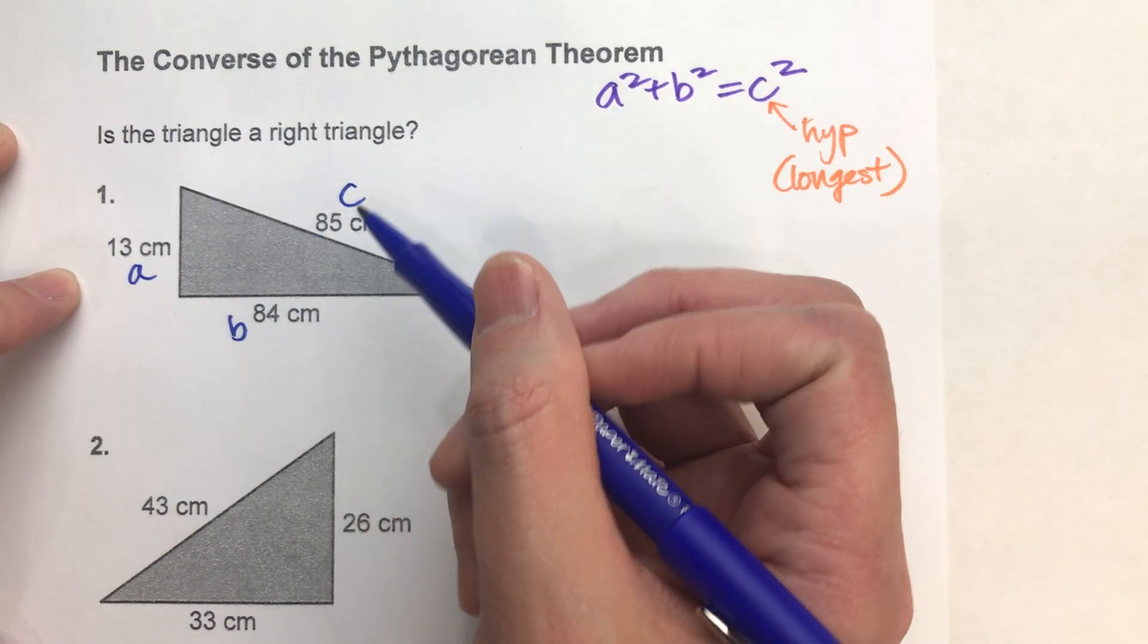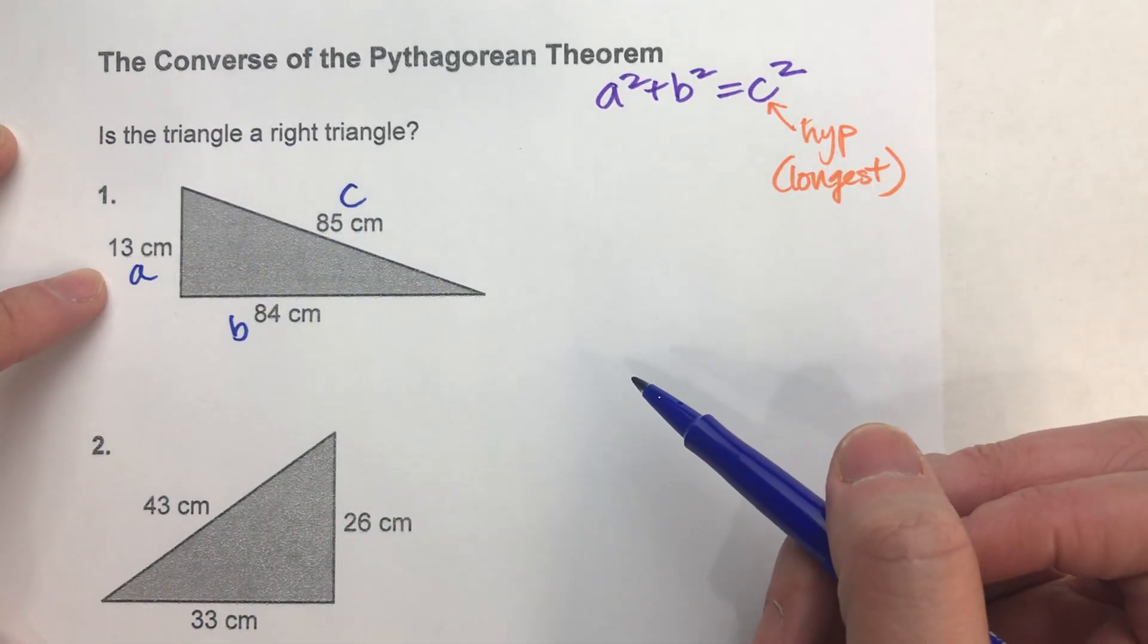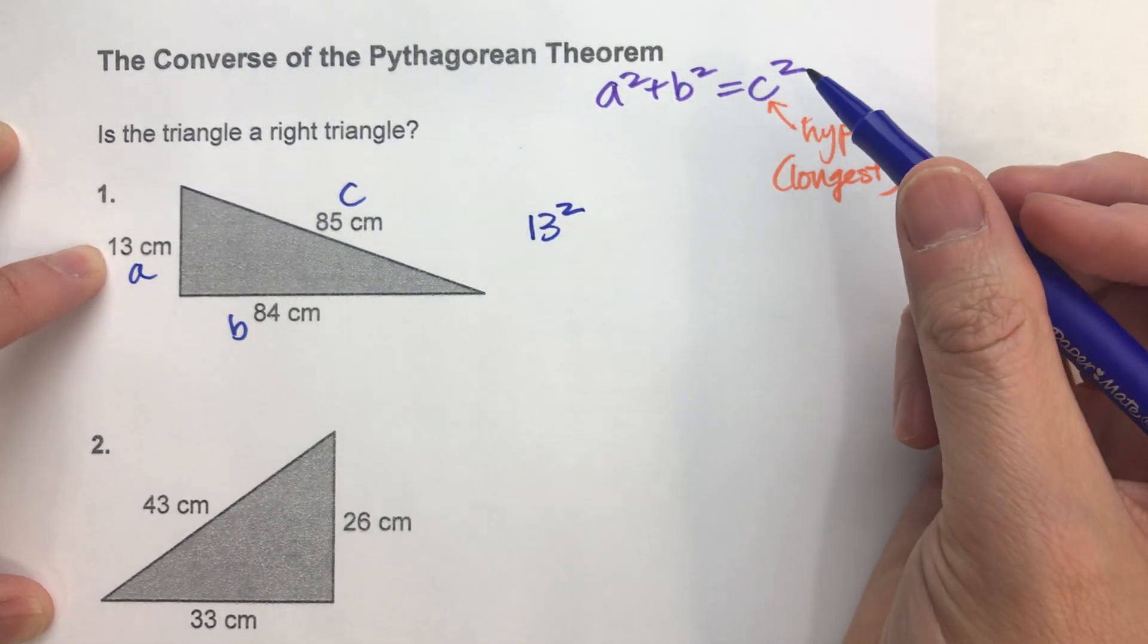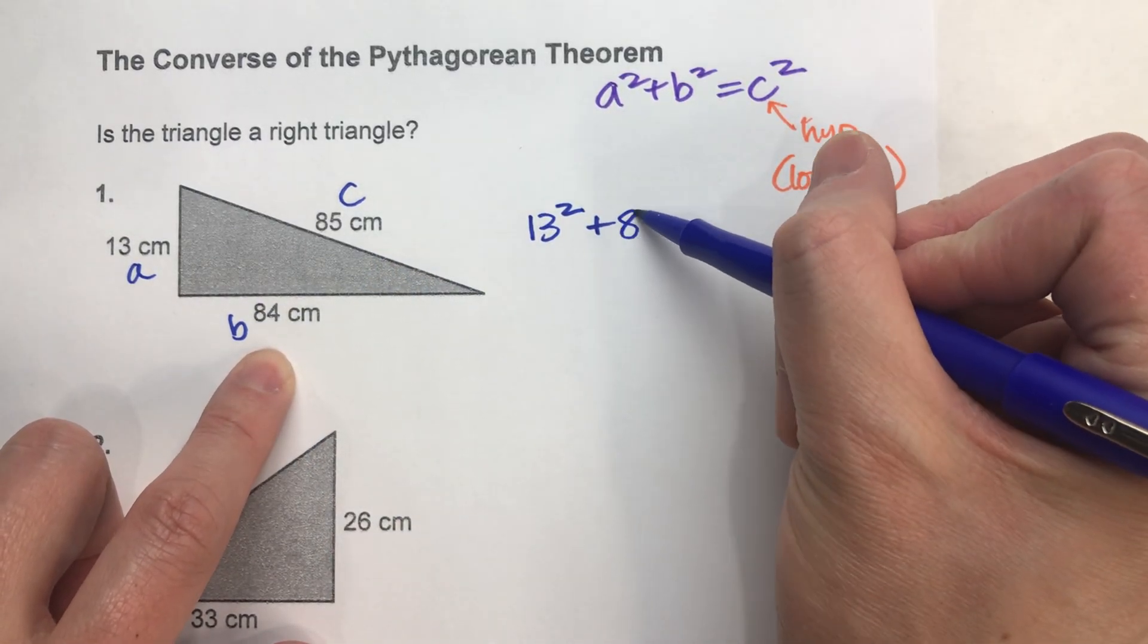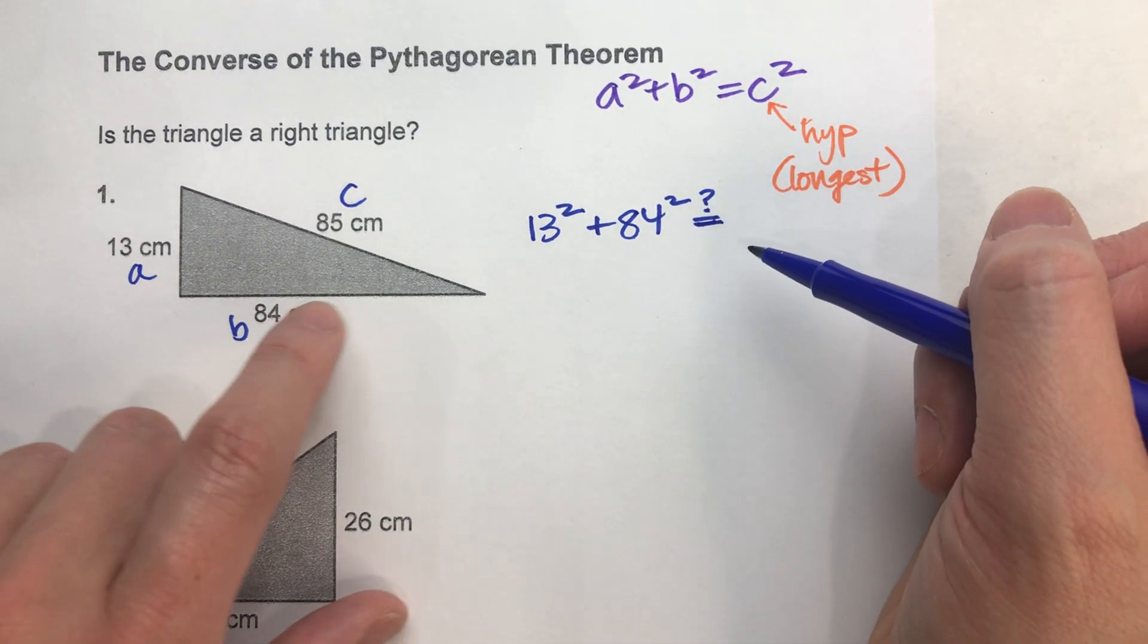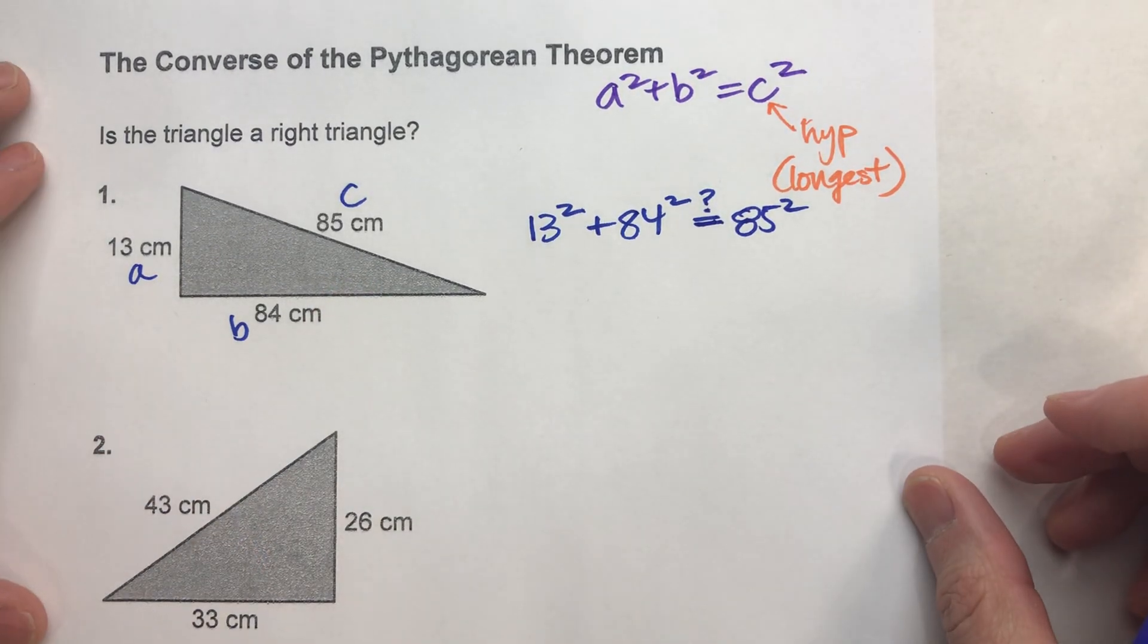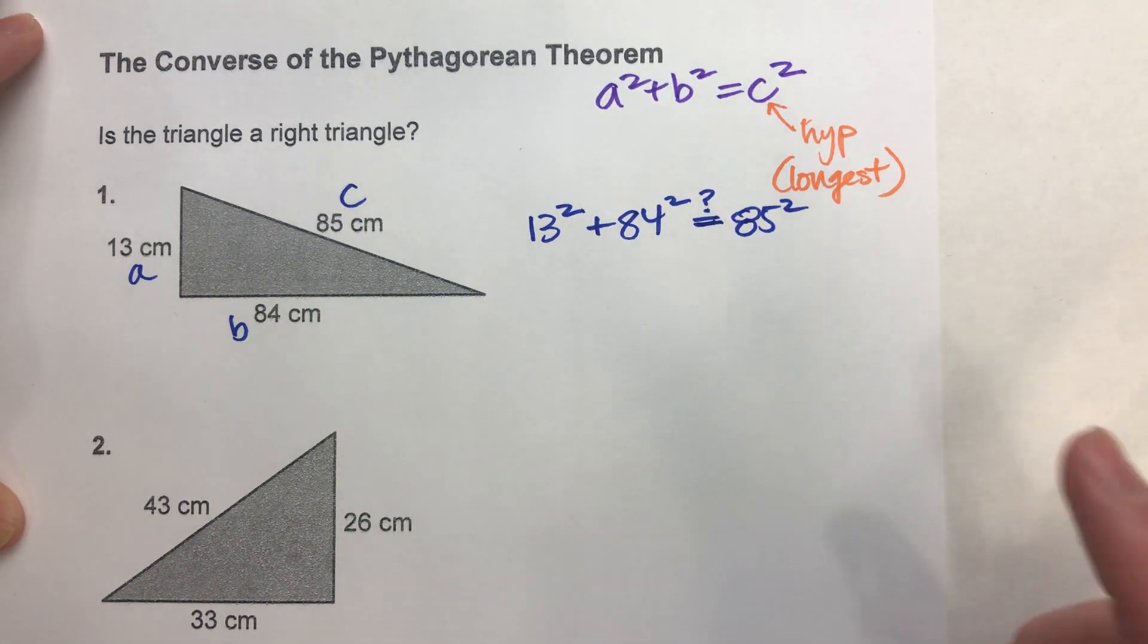Let's test this out. If a squared plus b squared really does equal c squared, we know it's a right triangle. So a squared, a is 13, so 13 squared, plus b squared, b is 84, so 84 squared. Does it equal c squared, which is 85 squared? The only way to test it out is to actually calculate and find out.